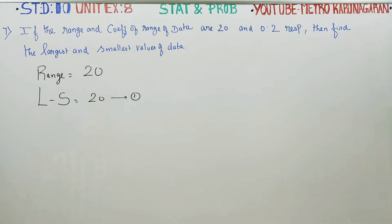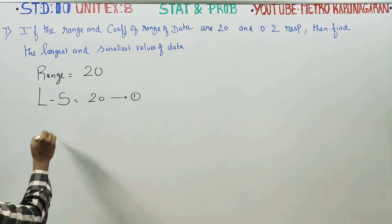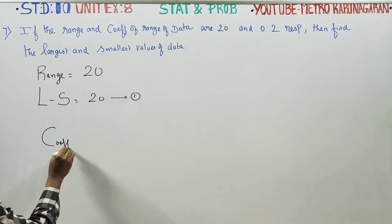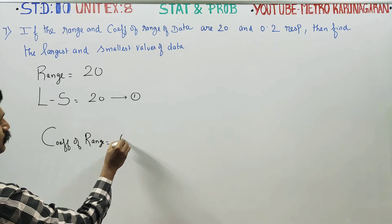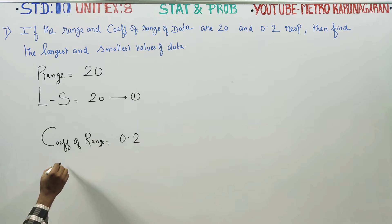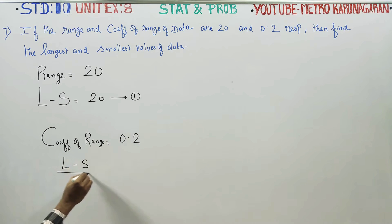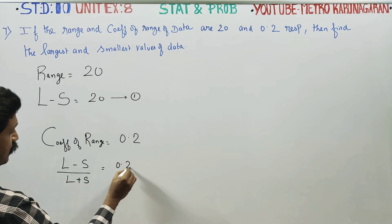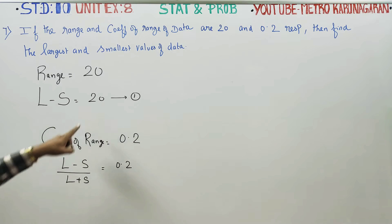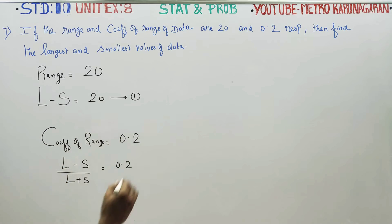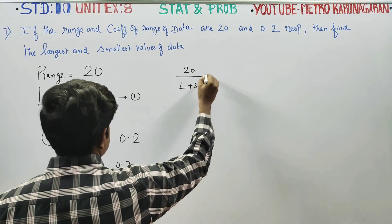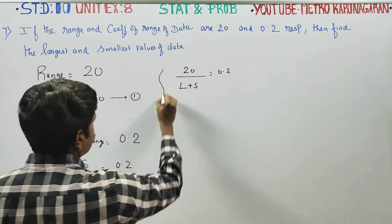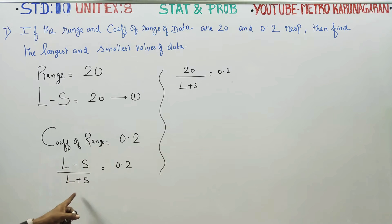Next, the coefficient of range. The formula for coefficient of range is L minus S divided by L plus S, and this is equal to 0.2. So L minus S by L plus S equals 0.2.